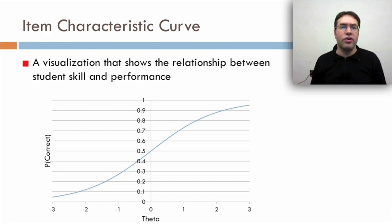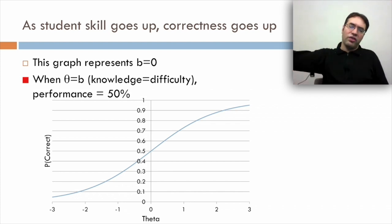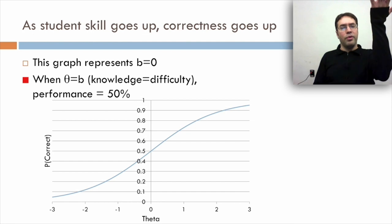So now let's look at the item characteristic curve. This is a visualization that shows the relationship between student's skill and performance. This graph represents b equals zero. When theta equals b, knowledge equals difficulty, performance is 50%. So if you look across the x-axis, theta zero gives 50%, so this has to be b equals zero as well. The y-axis has the probability of correctness.